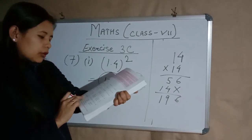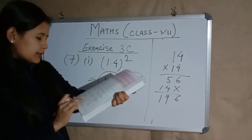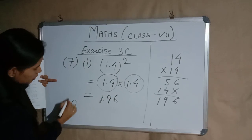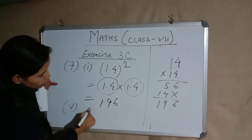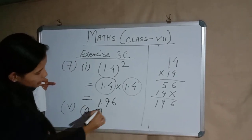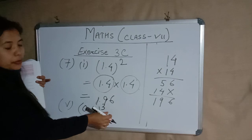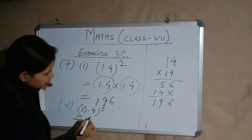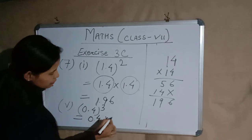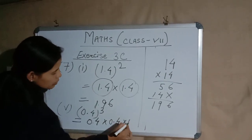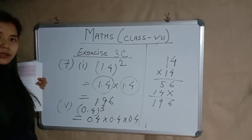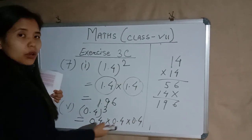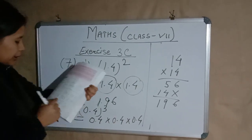For question 7, part 5, we have 0.4 cubed. This cube means we are multiplying this number three times, so it becomes 0.4 × 0.4 × 0.4. This is also multiplication of decimal numbers. I hope you all can multiply this — let's try this on your own.